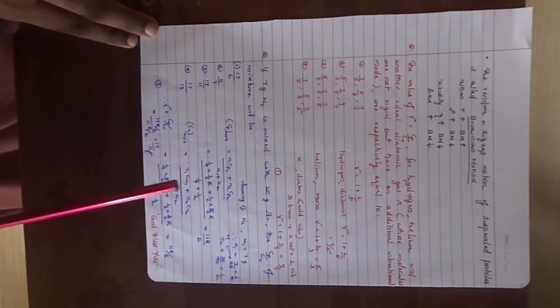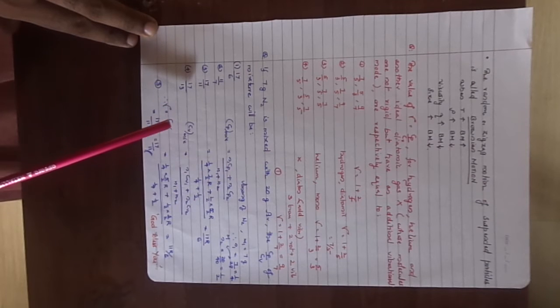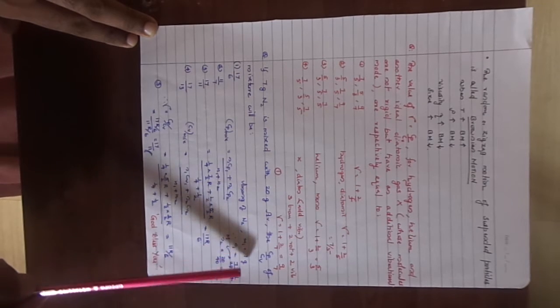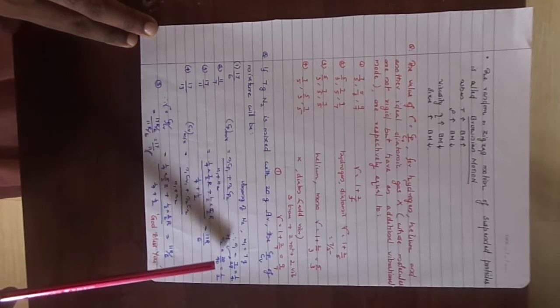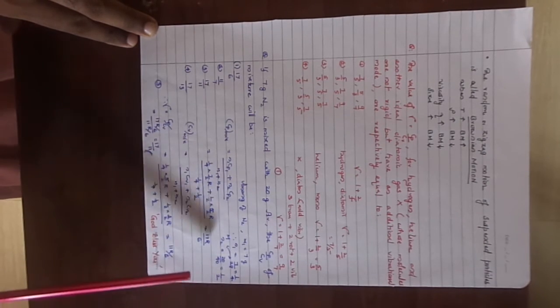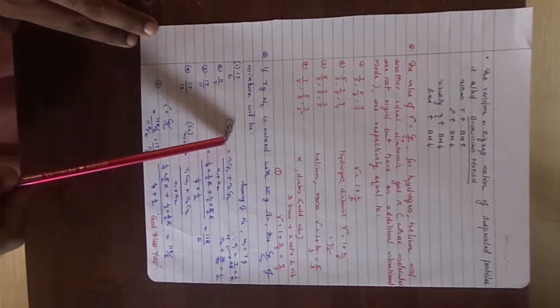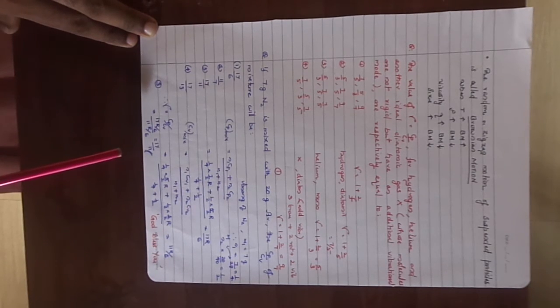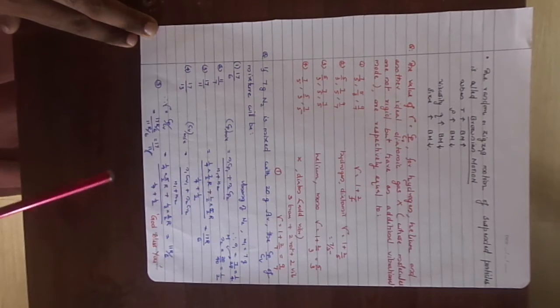If 7 gram N2 is mixed with 20 gram argon, find C_P by C_V gamma for the mixture. 7 gram of nitrogen, what is the number of moles there? You can find M divided by the molecular mass, you get the value 1 by 4. And for argon you can find 20 by 40 as 1 by 2. If you know that number of moles, you can easily find the value of gamma by finding C_P mix. Look at the equation: n1 C_P1 plus n2 C_P2 by n1 plus n2. So we get the value as 17 by 11. A good concept.